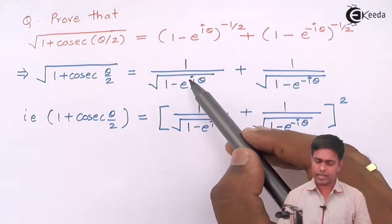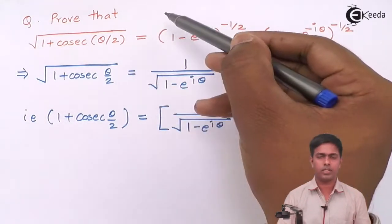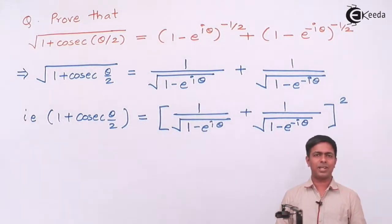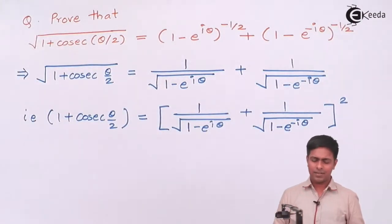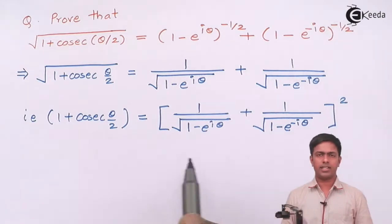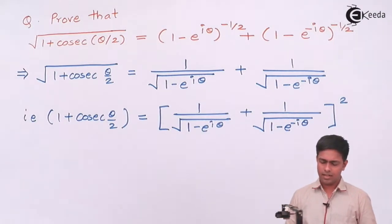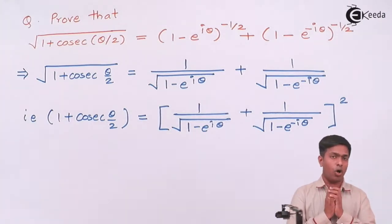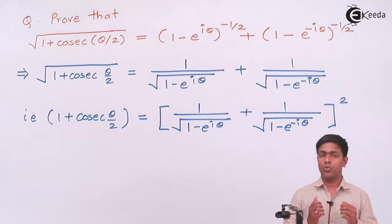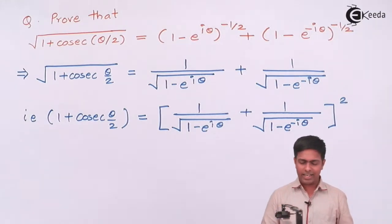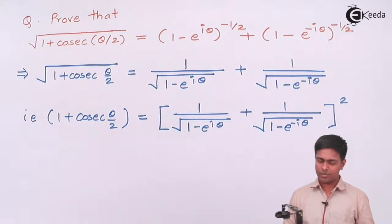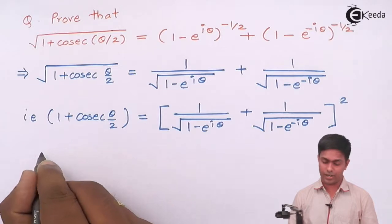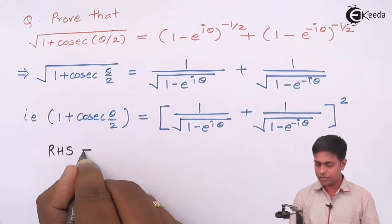If I prove the squared version, then by taking the square root on both sides I can prove the original result. So it's as good as proving this statement. Let's start — it's easier to prove this way. We always say in trigonometry, start with the side having the maximum number of terms, which is the right-hand side.